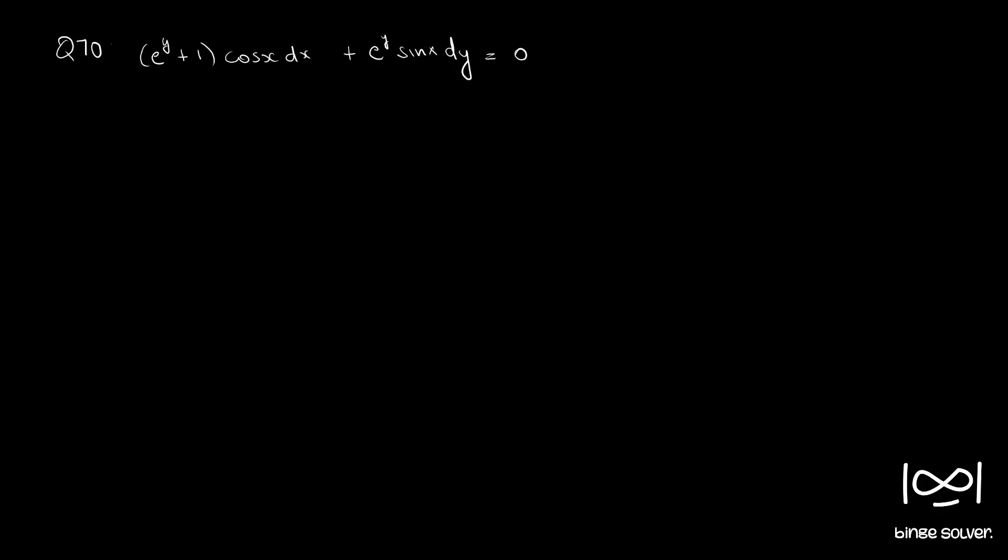Question 70. e^y + 1 cos x dx + e^y sin x dy = 0.